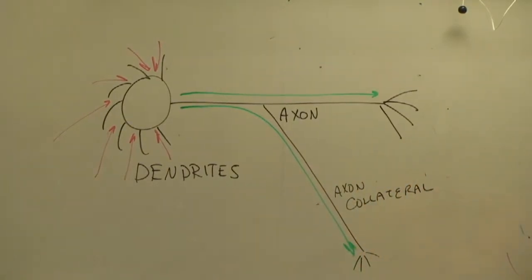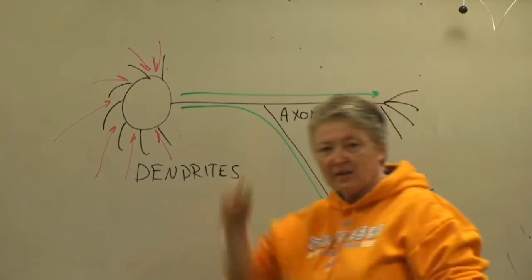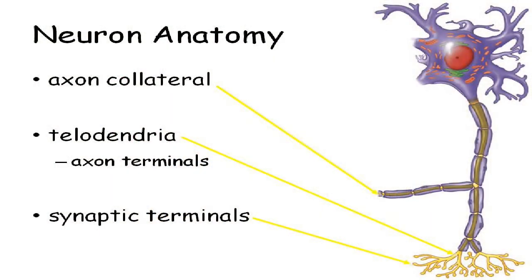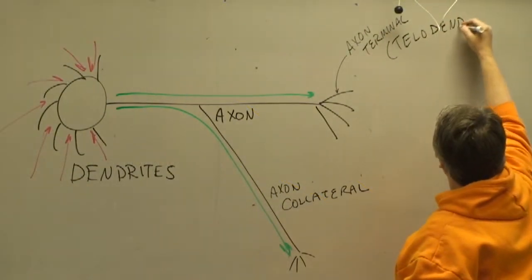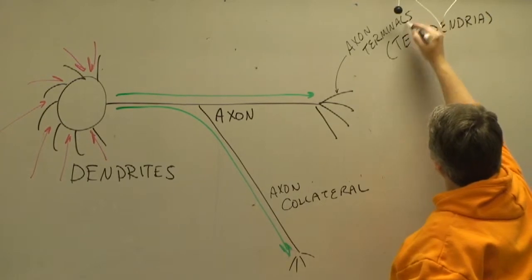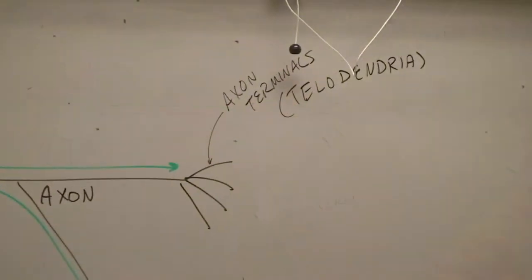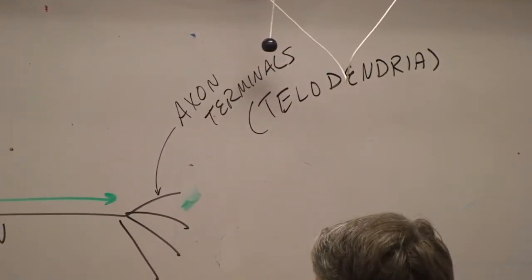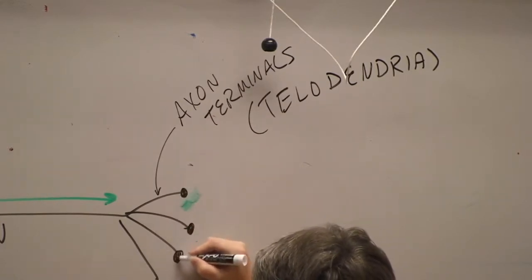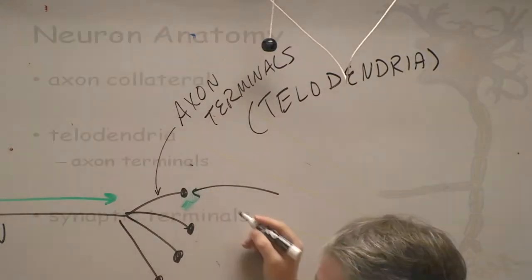The little branches at the very end of each axon and of the axon collaterals, each of them has branches. Those are called telodendria. There's a fancy word that means axon terminals. At the very end of the axon terminals are little structures called synaptic terminals.